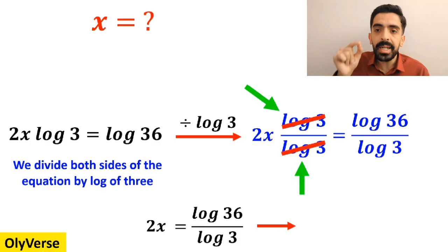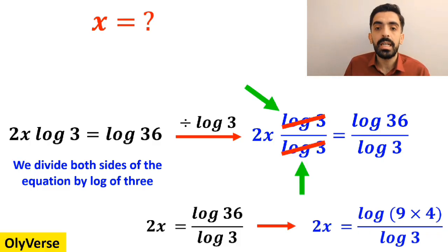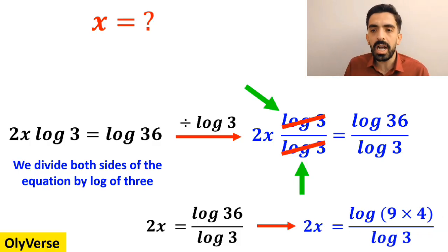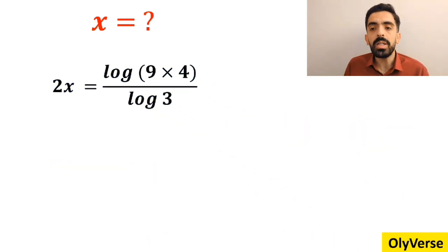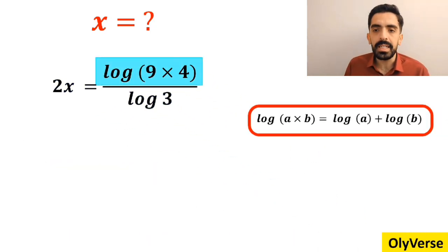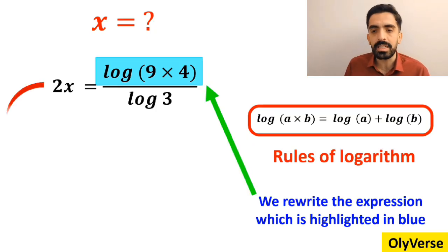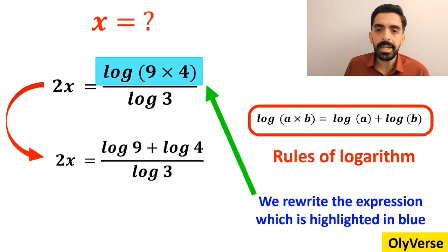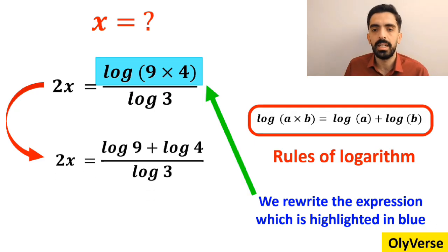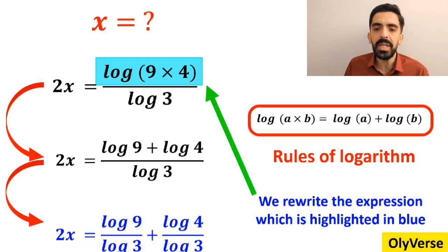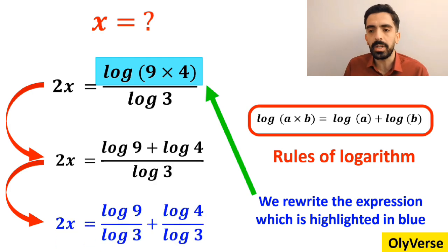We can rewrite this expression as 2x equals log of 9 times 4 over log of 3. According to the rules of logarithms, log of a times b is equal to log of a plus log of b. So we can rewrite the expression highlighted in blue as: 2x equals log of 9 plus log of 4 over log of 3. And this simplifies to 2x equals log of 9 over log of 3 plus log of 4 over log of 3.